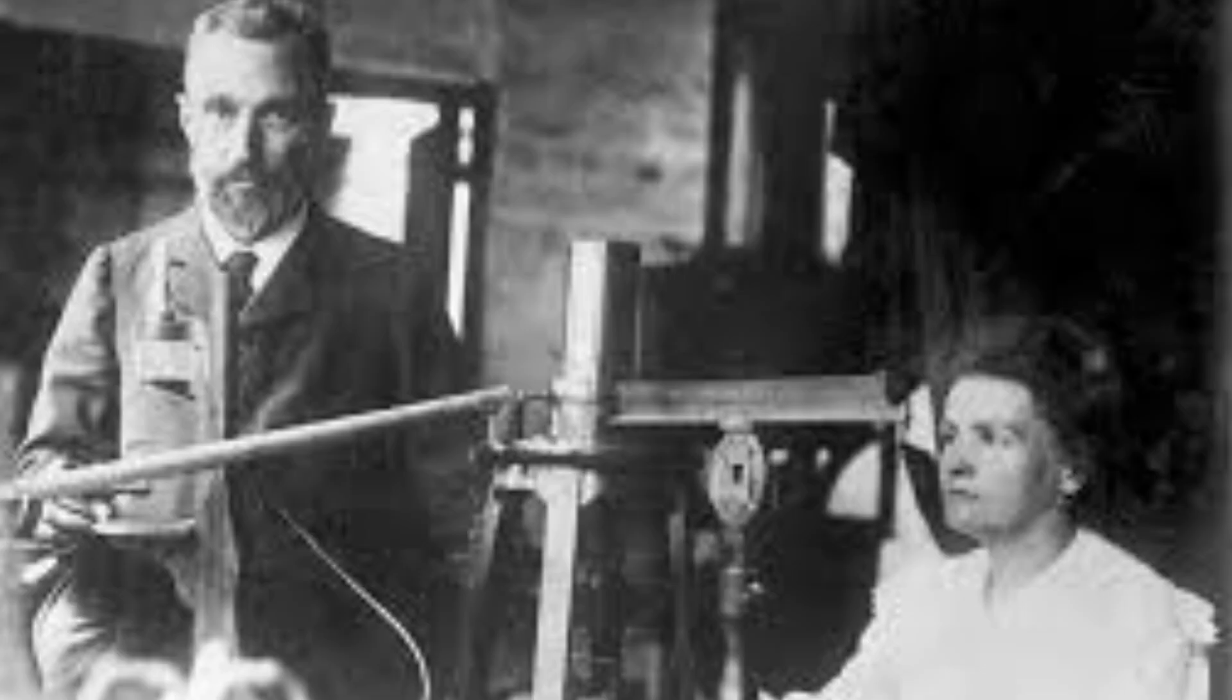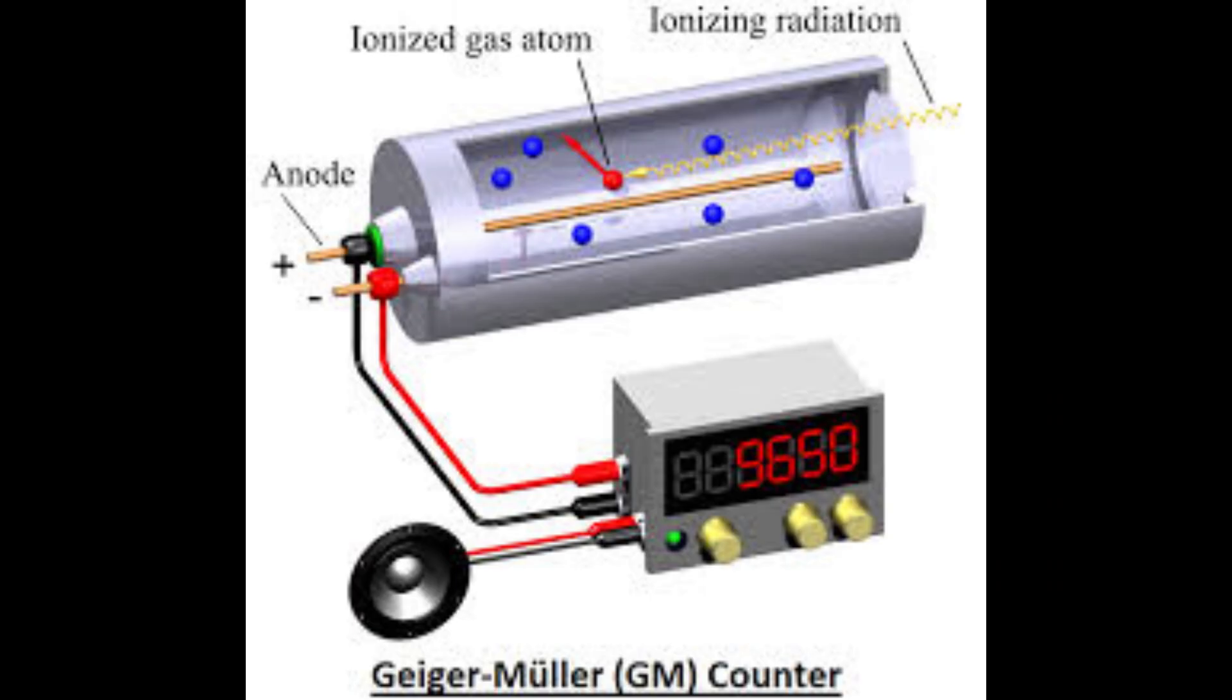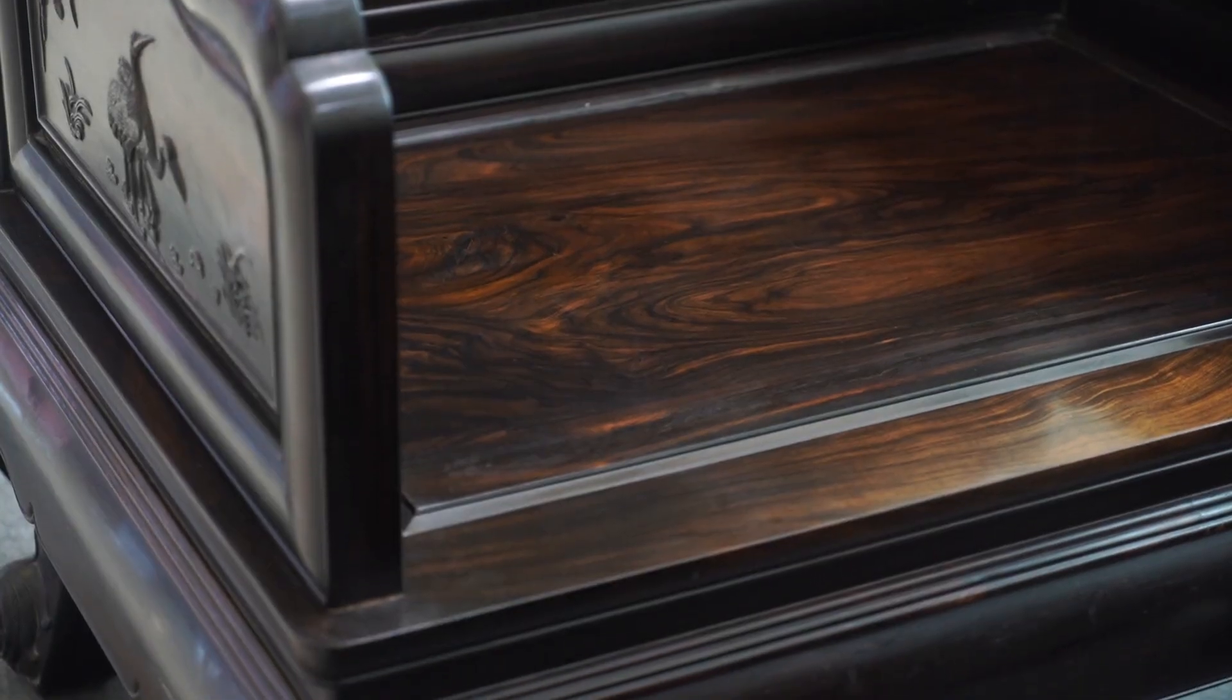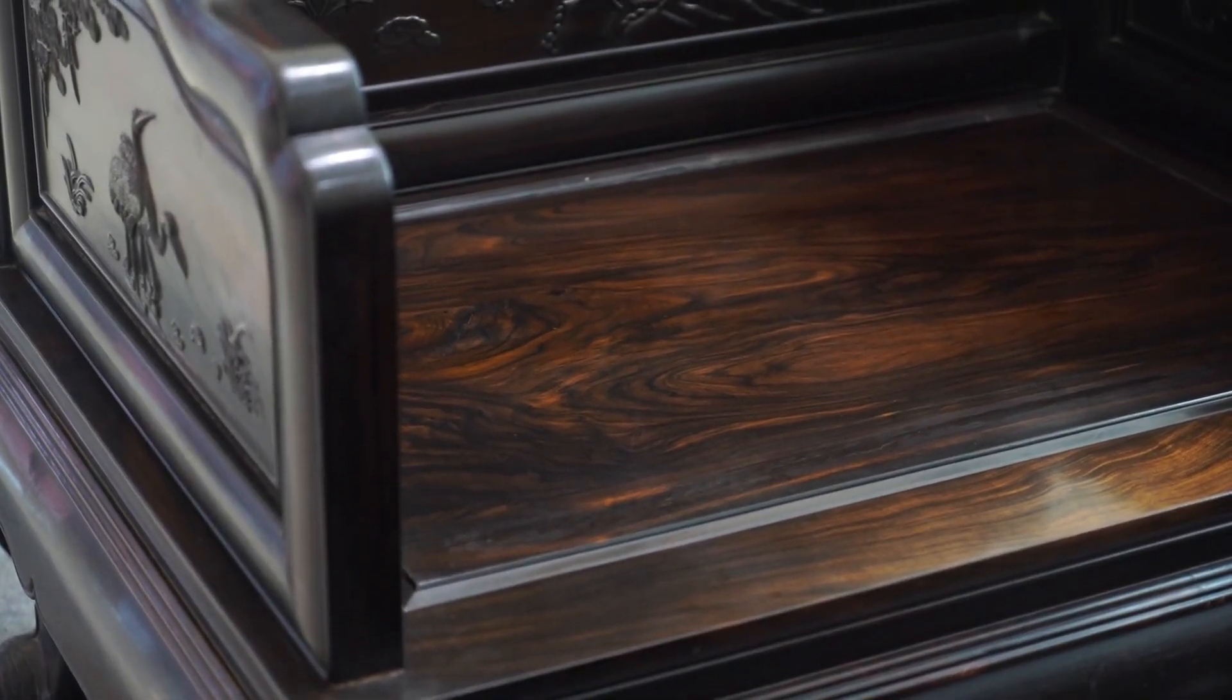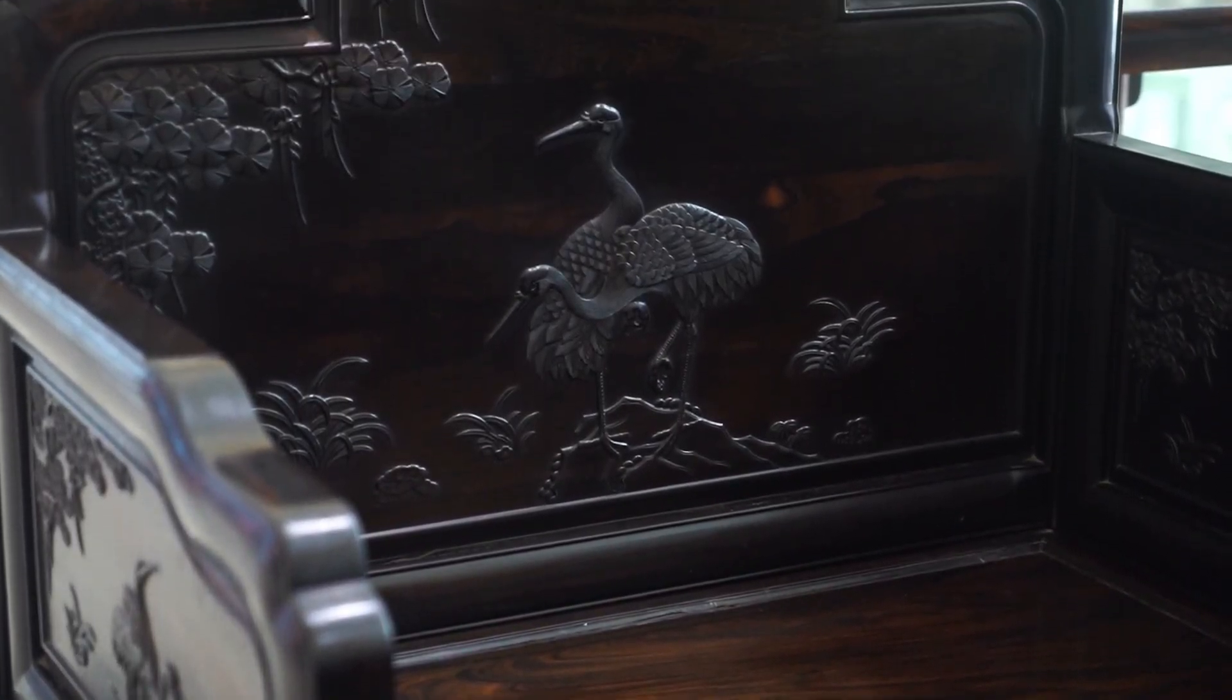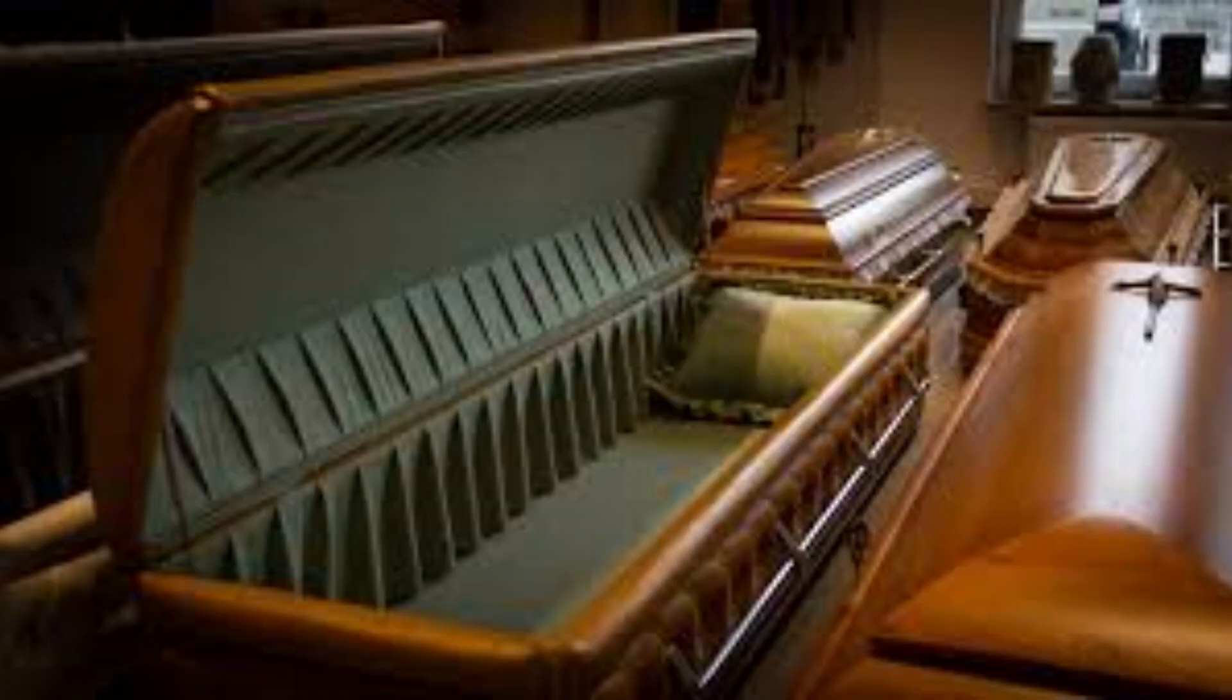When the exhumers approached their grave, they detected normal levels of radiation in the air, which then rose as the grave was opened, though not by large amounts. At first, Marie Curie's coffin appeared to be made of wood, but when opened, they found it was lined with 2.5 mm of lead.